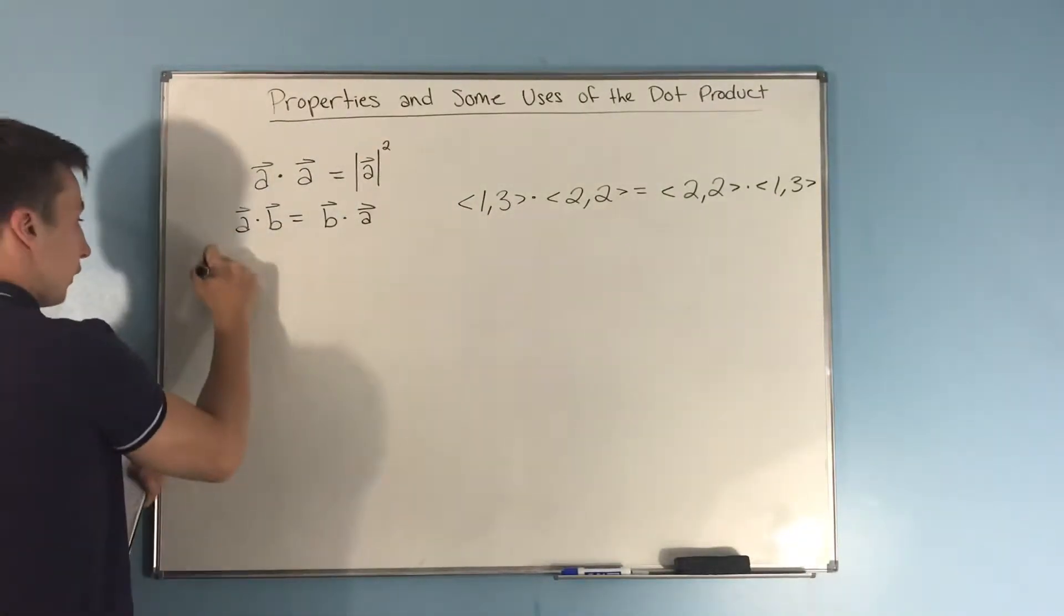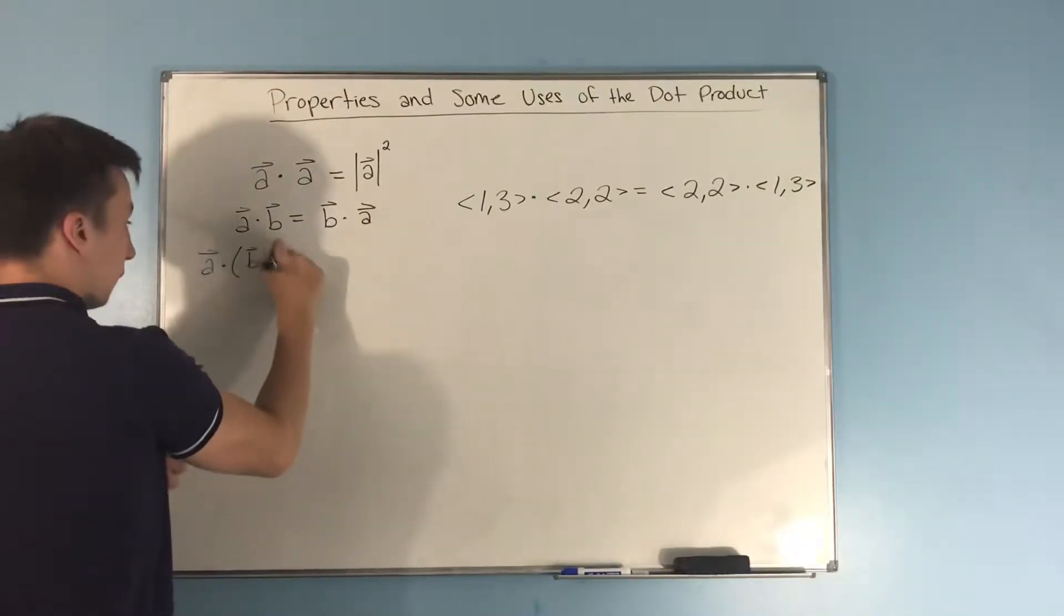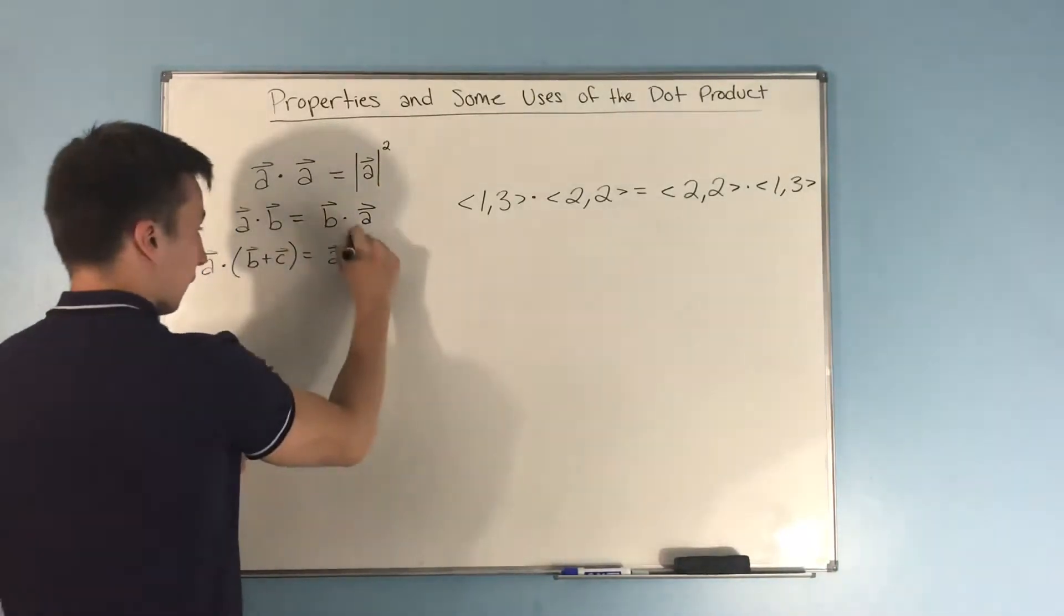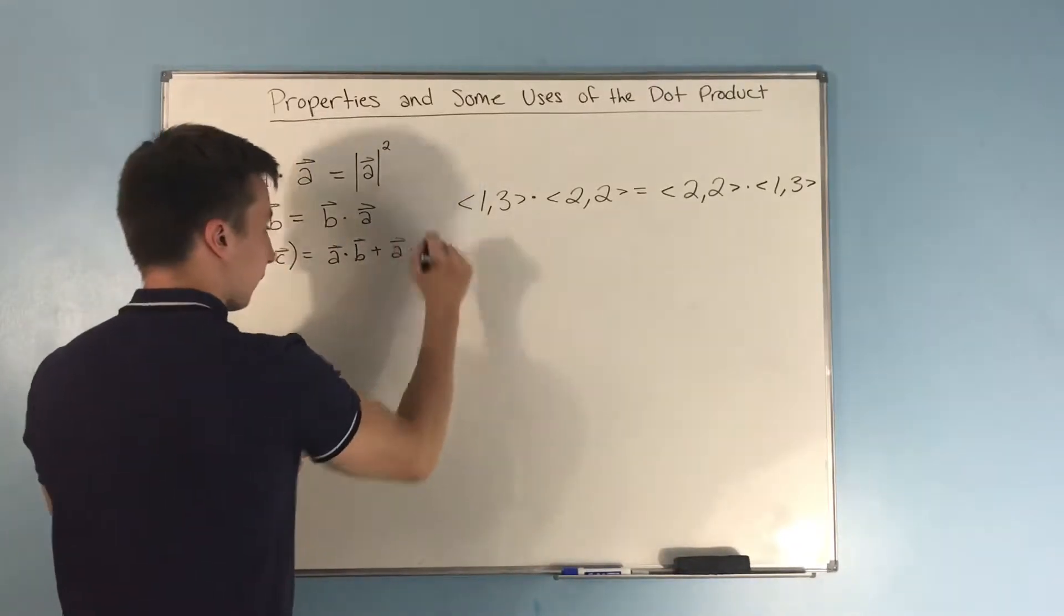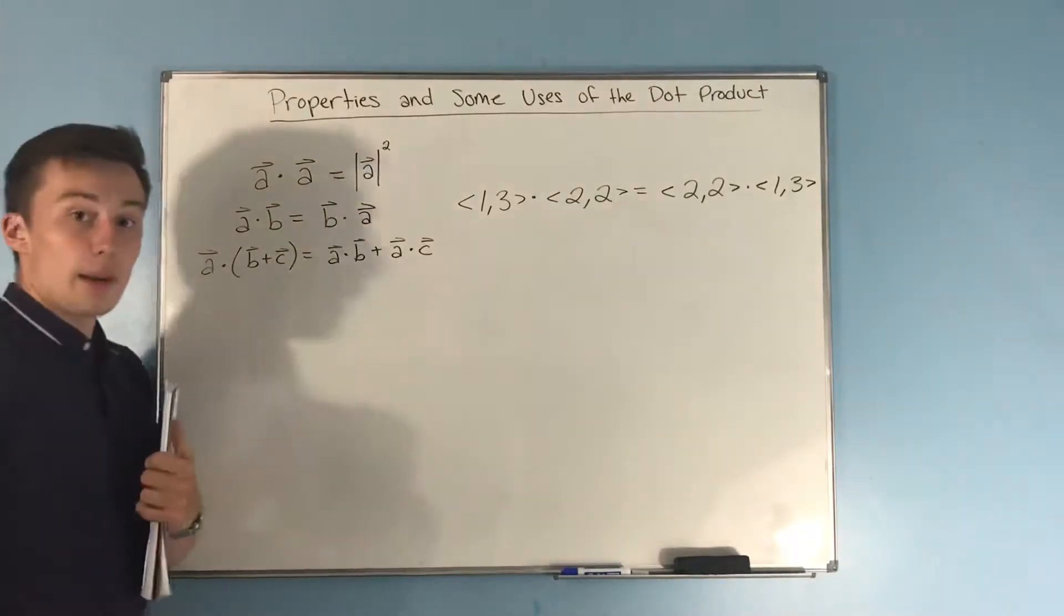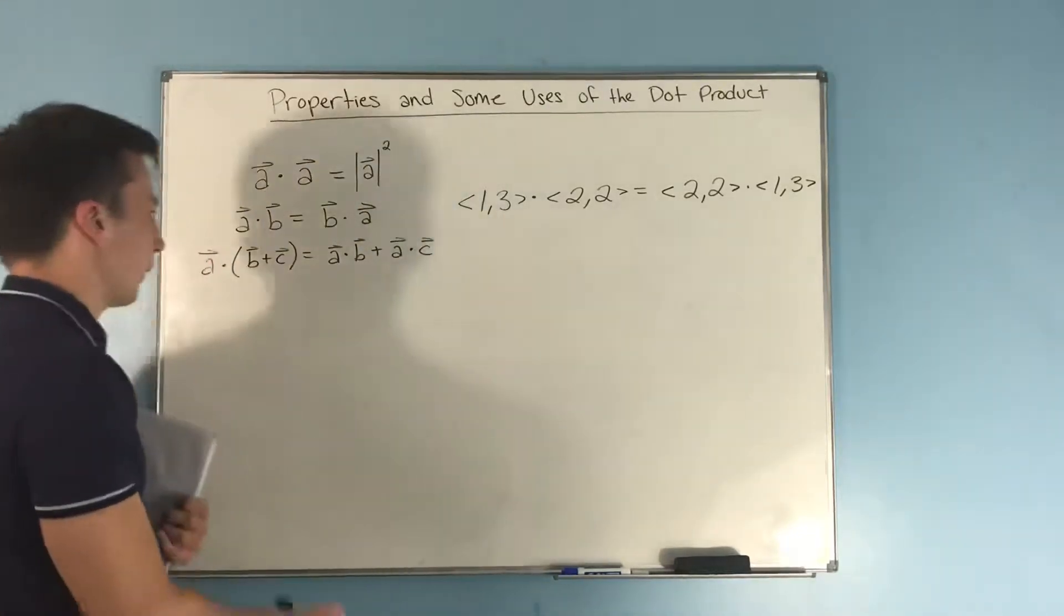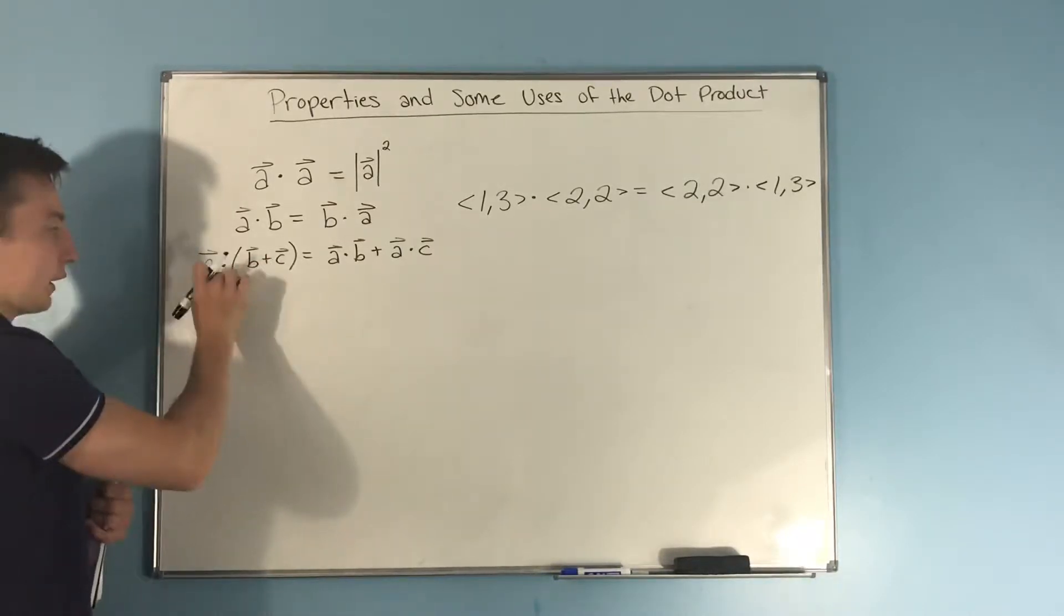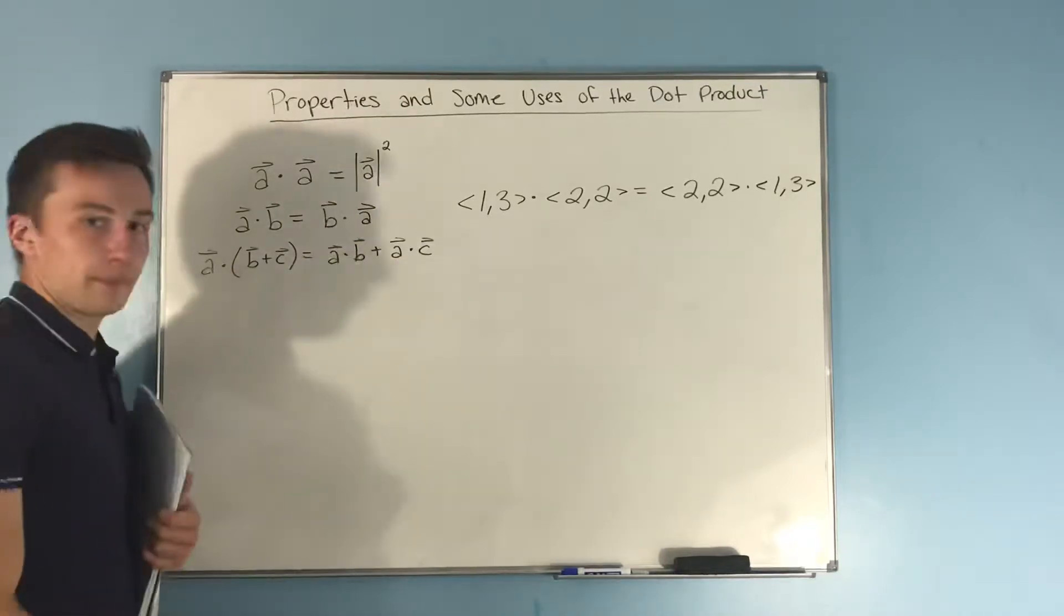Now next, we have that a dot b plus c equals vector a dot b plus a dot c. Now this is more of a longer one to prove, not too long, but I want to keep this video a little shorter. So you can just see here though that you can distribute a dot product through. So you can do a dot b and a dot c, and then just add those dot products together to get this side of the equation.